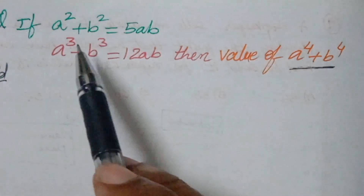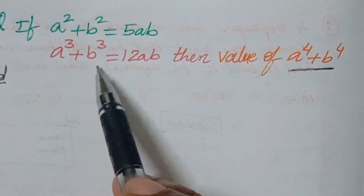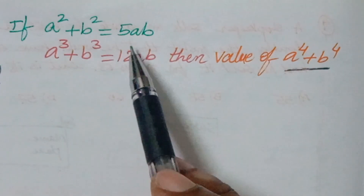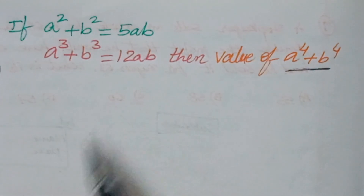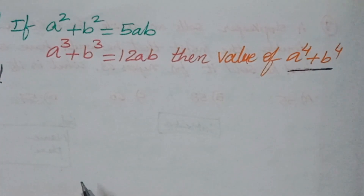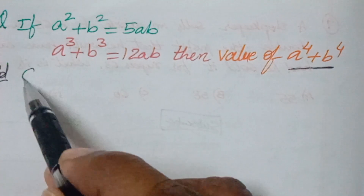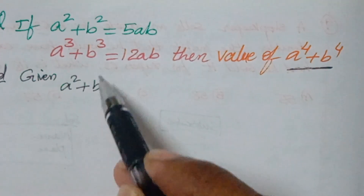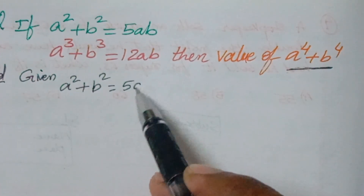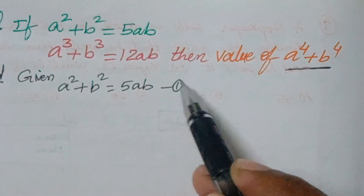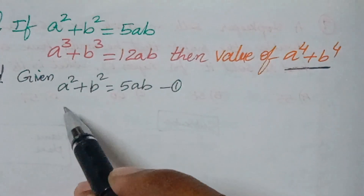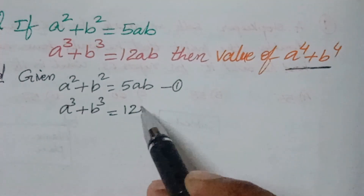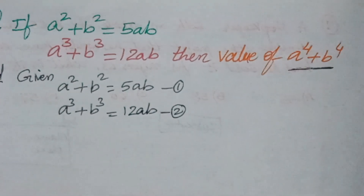Generally, you are given a squared plus b squared equals some value, and a cubed plus b cubed equals some value, and then asked to find a to the power 4 plus b to the power 4. So, let's write what is given: equation 1 is a squared plus b squared equals 5ab, and equation 2 is a cubed plus b cubed equals 12ab.